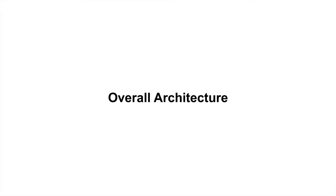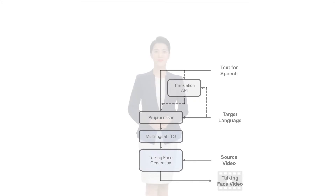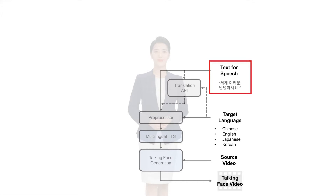Going over the architecture of our system, first we'll take a look at the inputs. On the top right, we have the input text, which dictates the content of the final video. In this example, the input text is Korean for Hello World.